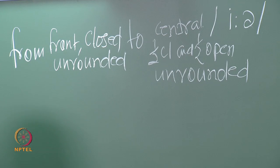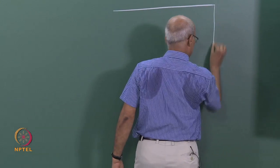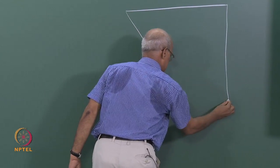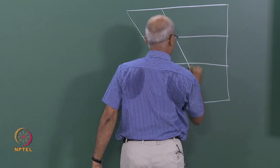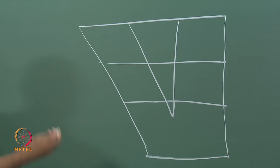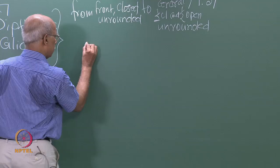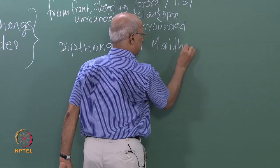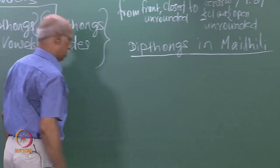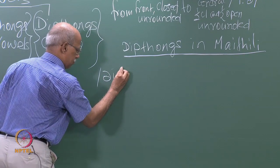You can describe it for Telugu, you can describe it for English. I will give you an example from my mother tongue, Maithili. Let us draw the vowel trapezium first. This is the vowel trapezium, and in Maithili, we have only two diphthongs — maybe there are more, but I know of only two. So we have, for example, a diphthong like this.